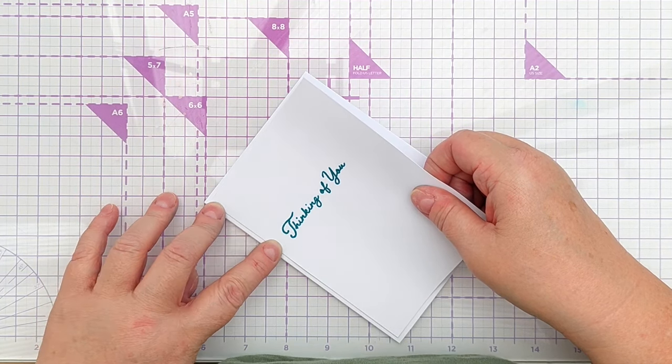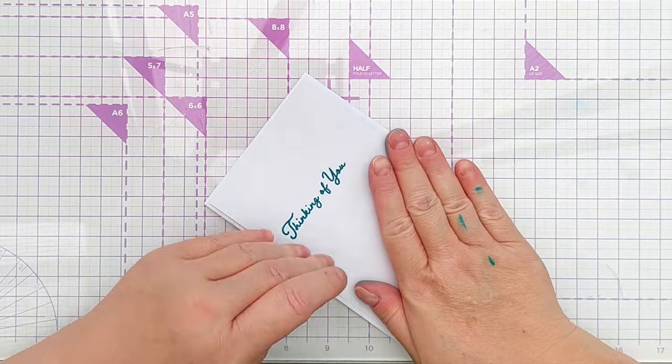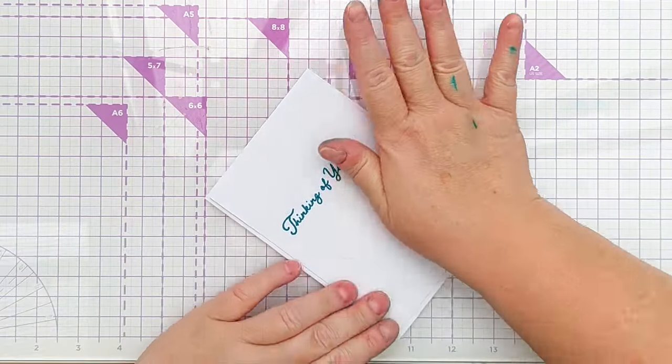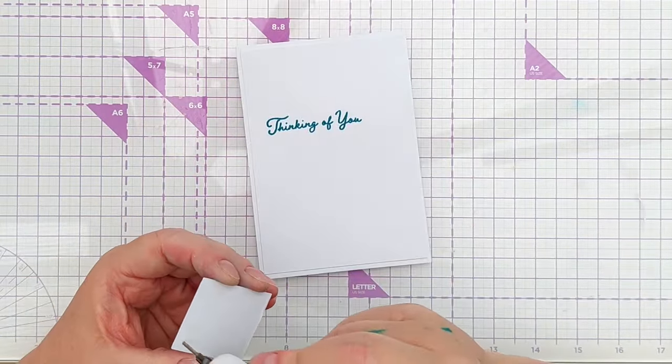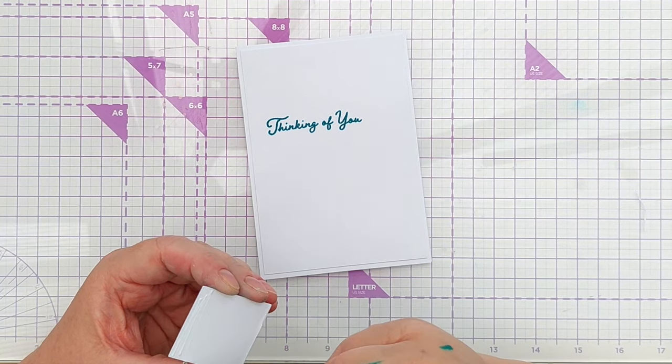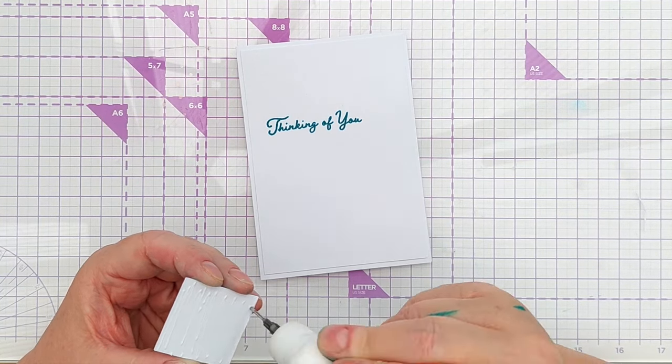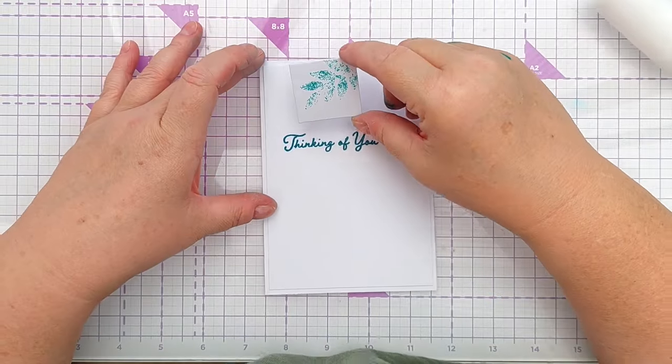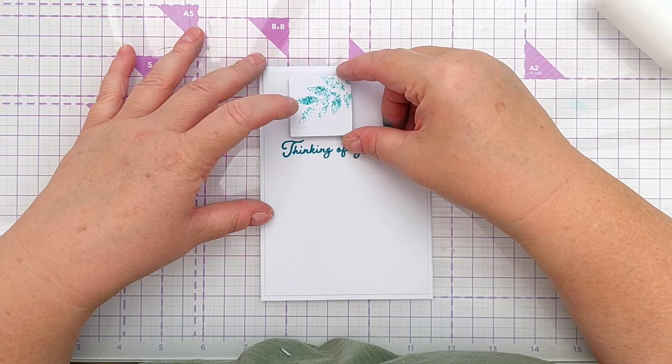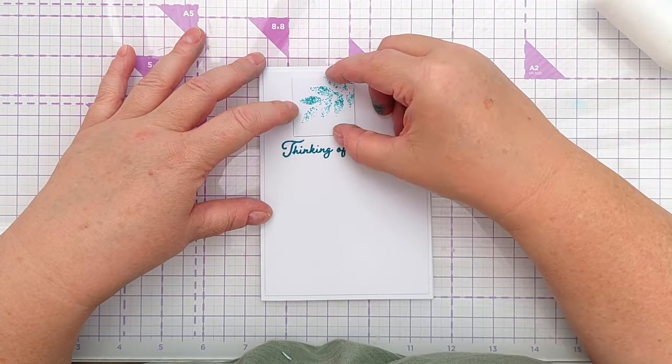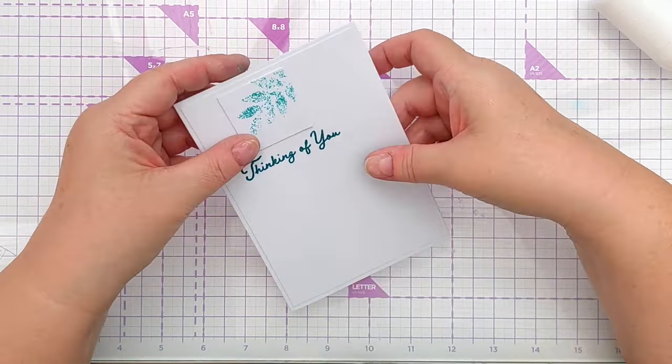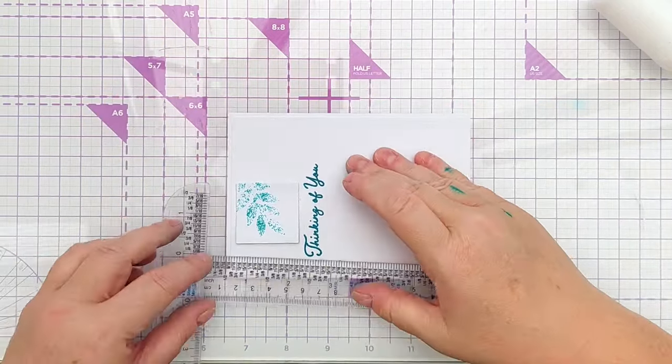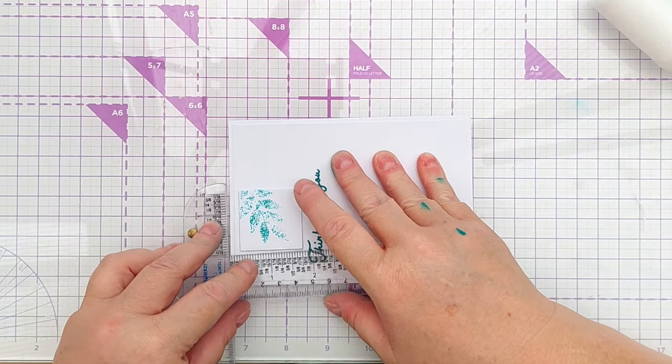Once that was all stuck together I then added glue to the back of my leafy squares. I can use glue on these no problem at all because it's a small area and it's not going to warp the panel or the card. I used my t-square ruler to get these lined up, added one above the sentiment and two below trying to get some even spacing so it looked purposeful.